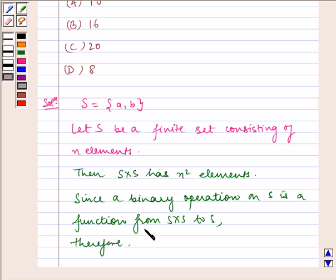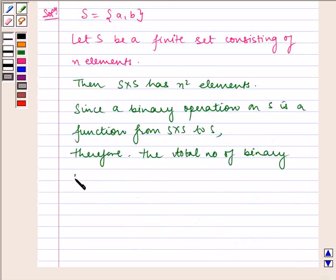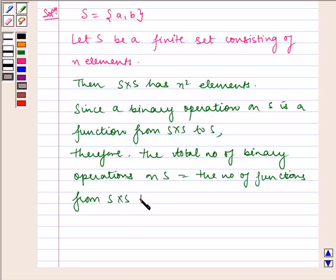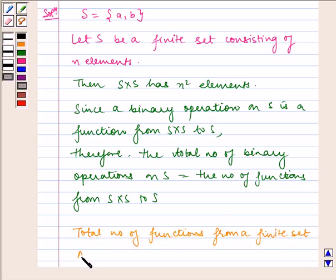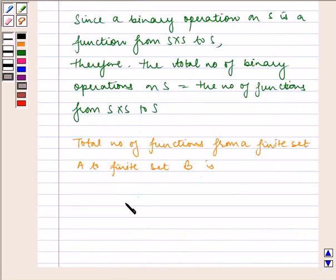therefore, the total number of binary operations on S equals the number of functions from S cross S to S. We know that the total number of functions from a finite set A to a finite set B is n(B) to the power n(A).